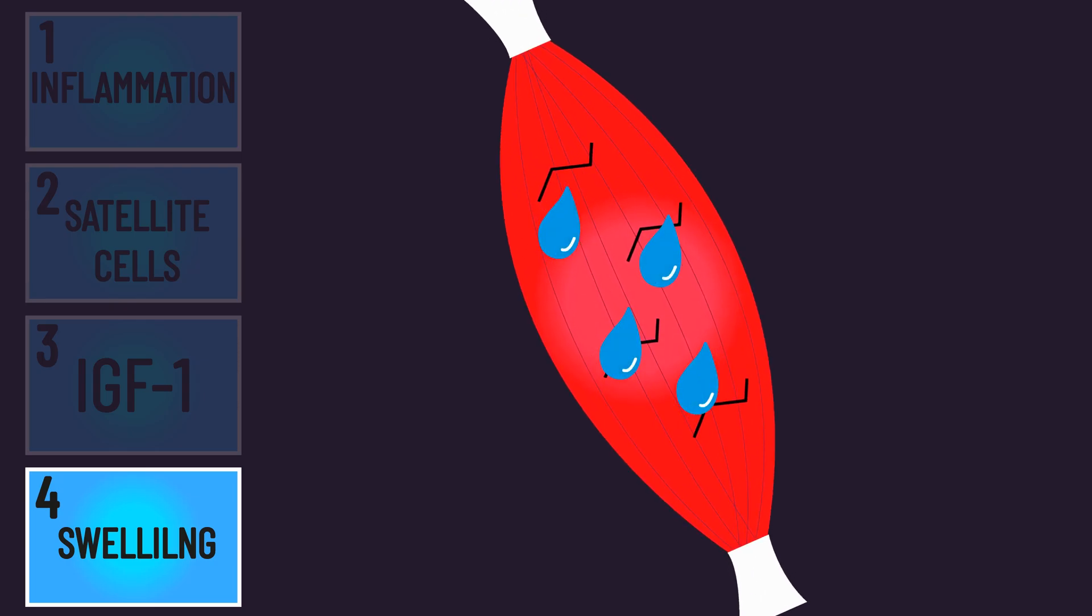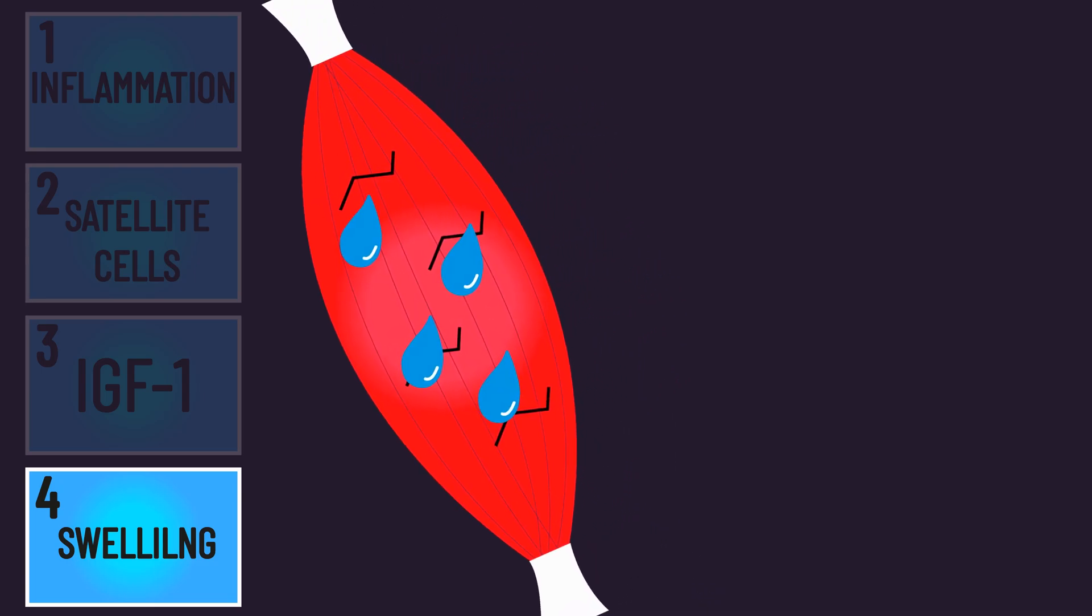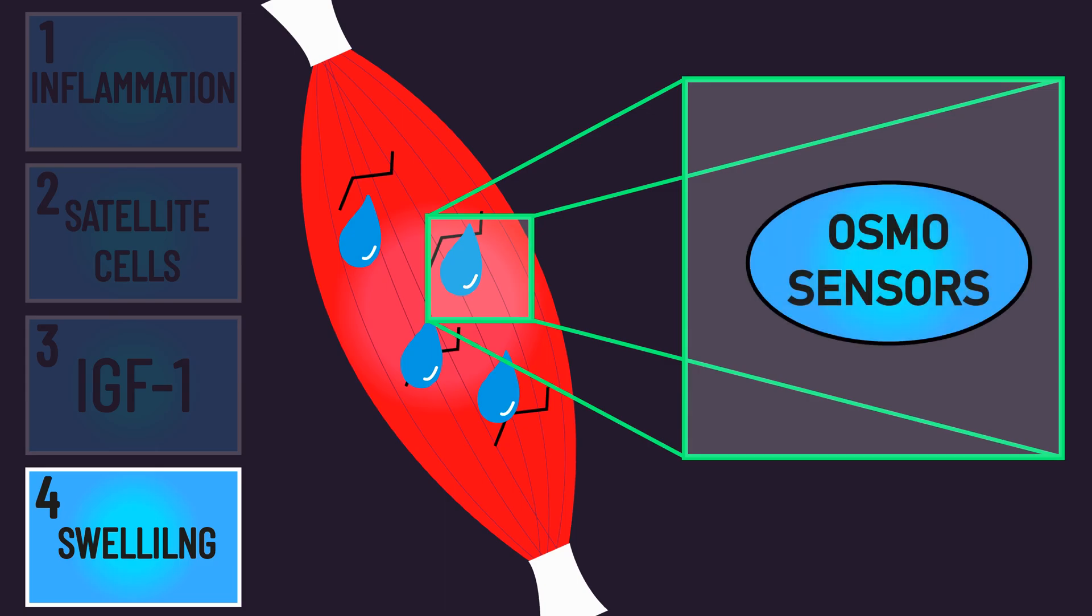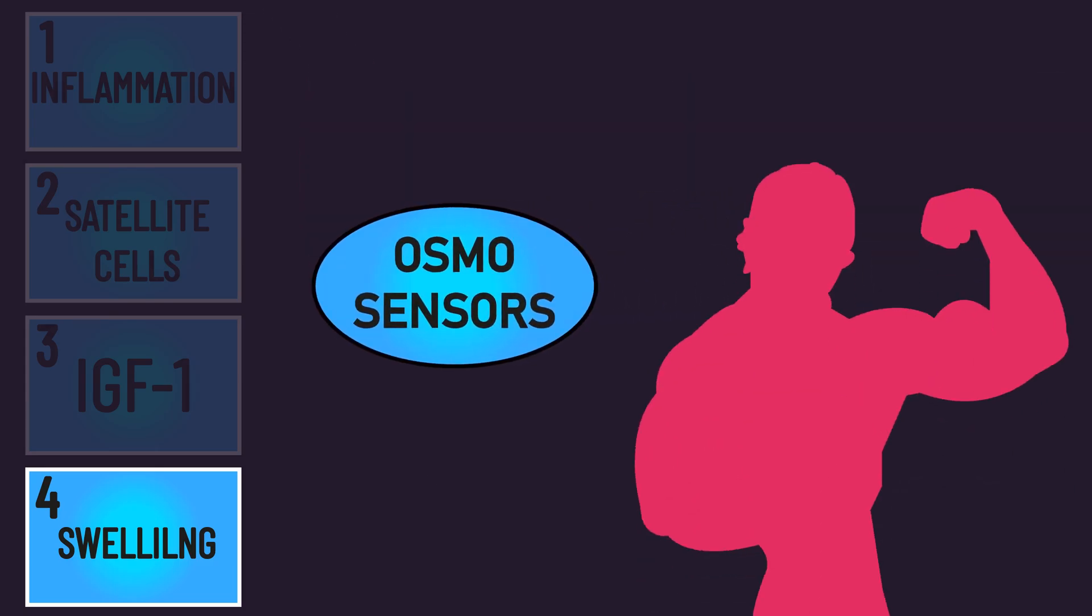Note, this swelling isn't the pump that occurs during training, rather it's swelling in the fiber days after training due to damage. But the mechanisms by which this swelling could create hypertrophy are hypothesized to be the same. That is, the swelling activates osmoreceptors that go on to promote hypertrophy.